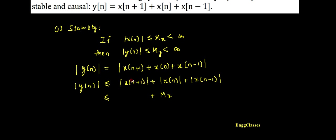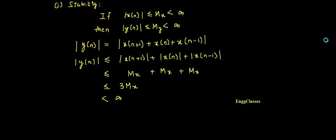The input is bounded. x(n+1) is the shifted version of x(n), and x(n-1) is also the shifted version of x(n). We know that by shifting, the bound on the input will not change. Therefore, each of these terms is also bounded by mx, so the total is less than or equal to 3·mx. Since 3·mx is less than infinity, the given system is stable.